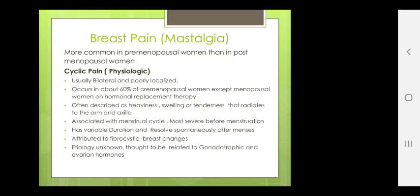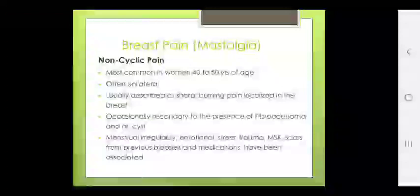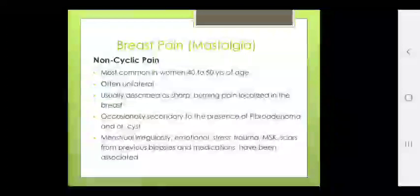Etiology is unknown, thought to be related to hormonal factors — gonadotrophic and ovarian hormones. Non-cyclic breast pain is most common in women 40 to 50 years of age, often unilateral, usually described as sharp burning pain localized in the breast, occasionally secondary to the presence of fibroadenoma and/or cyst. Menstrual irregularity, emotional stress, trauma, scars from previous biopsies and medications have been associated.